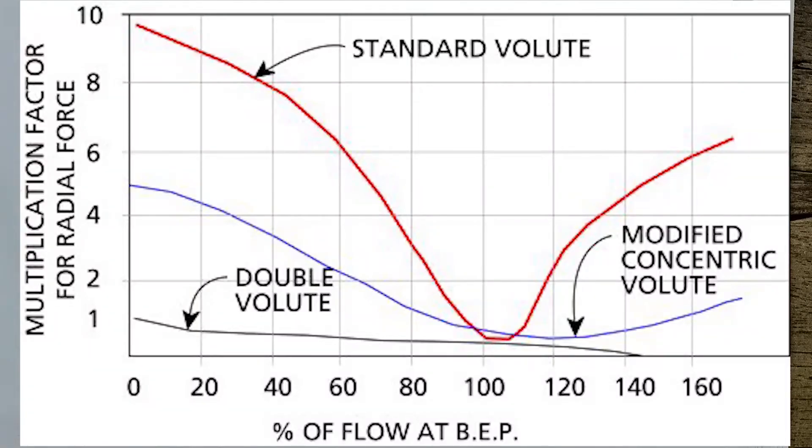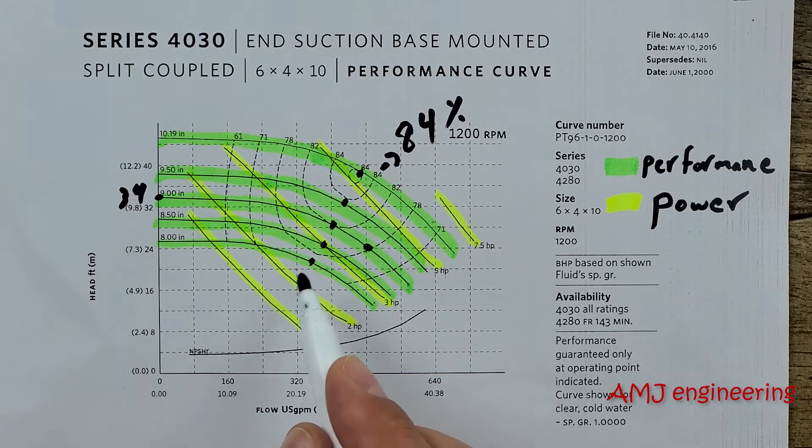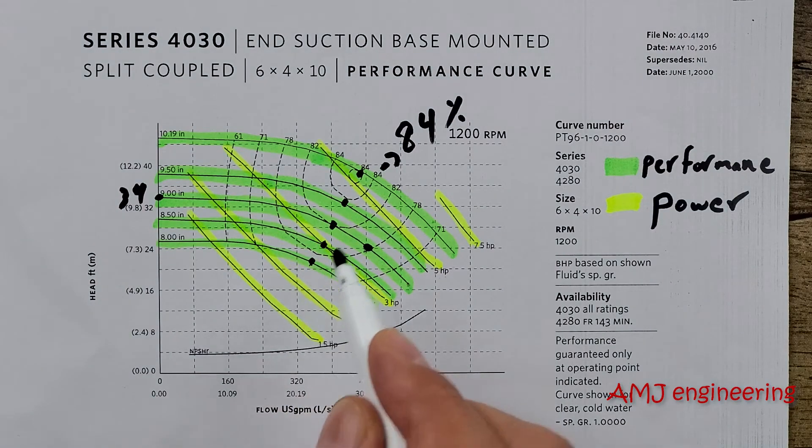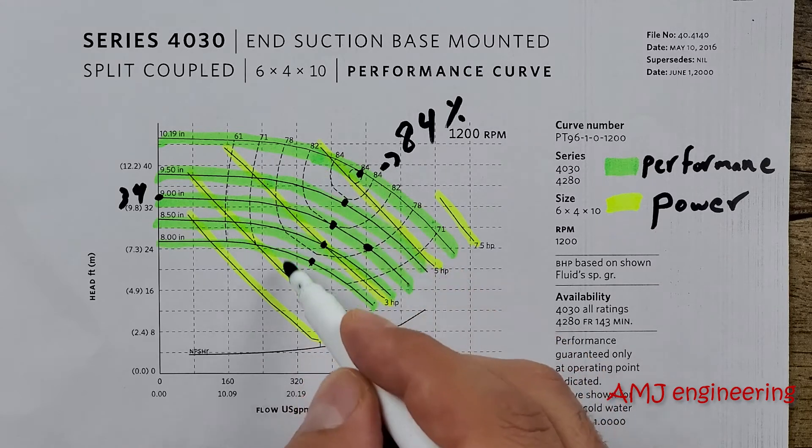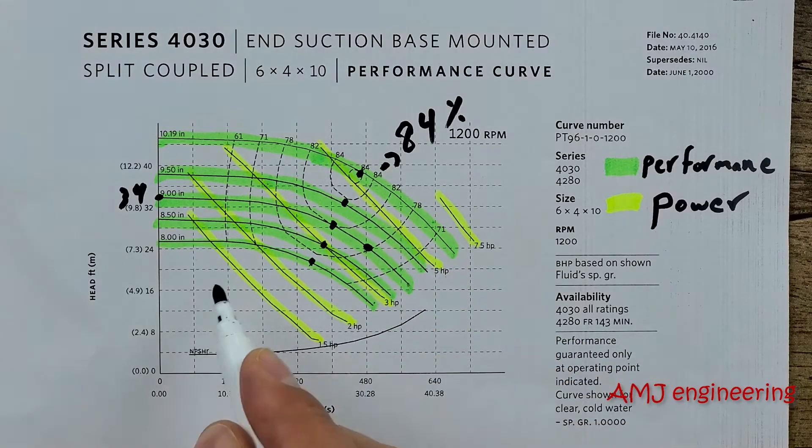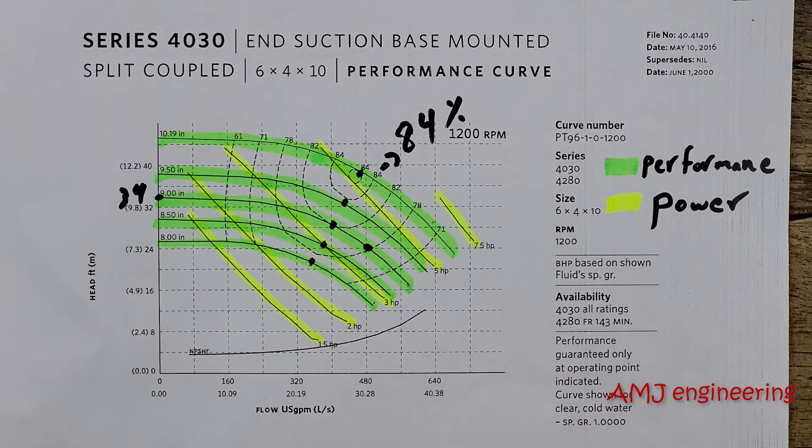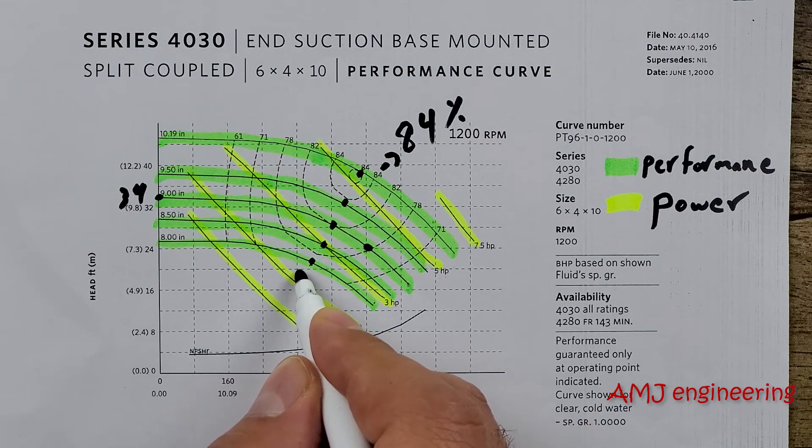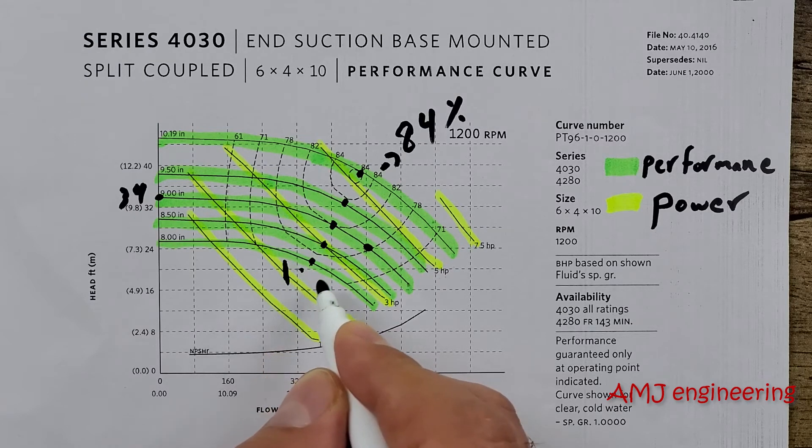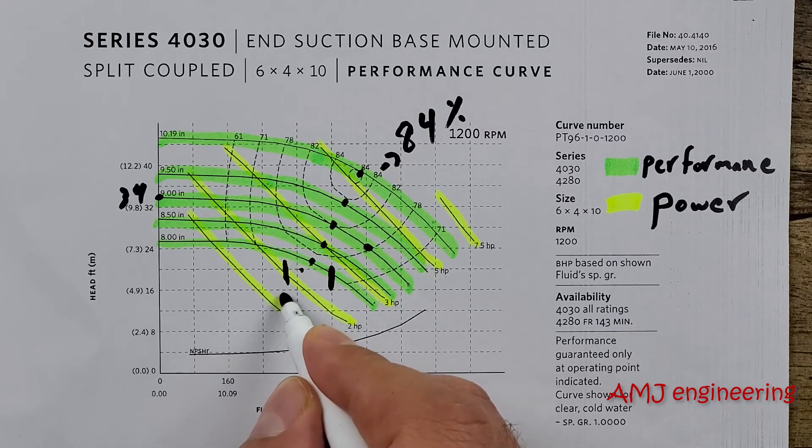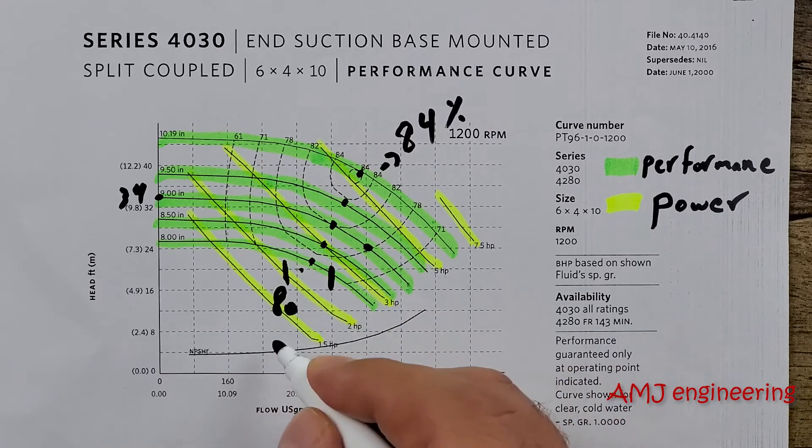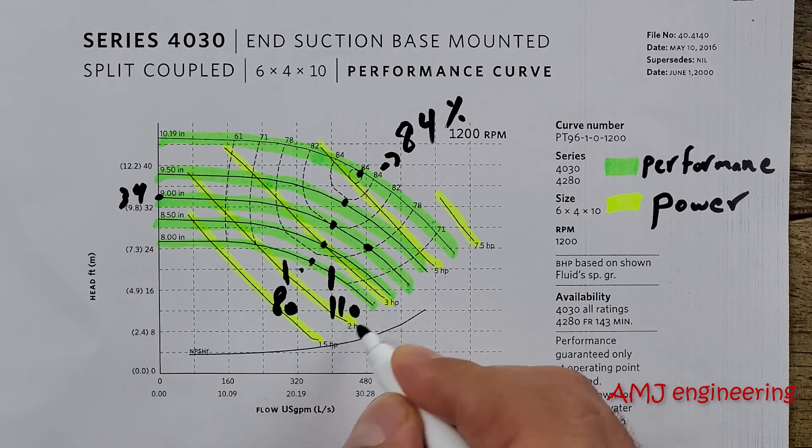At the best efficiency point, the impeller is subjected to minimum radial force promoting a smooth operation with low vibration and noise. Pump runs best at or near best efficiency point. Operating your pump outside of the recommended range will most likely shorten the pump life. A guideline is to locate the operating point between 110 percent and 80 percent of the best efficiency point flow rate.